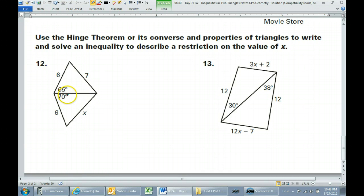And the bigger side is across from the bigger angle. So for example, I've got the 70 here, and that's across from x. And then I've got the 65 here, and that's across from 7.